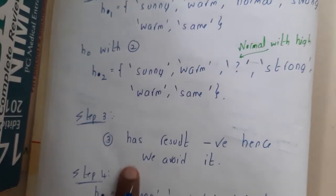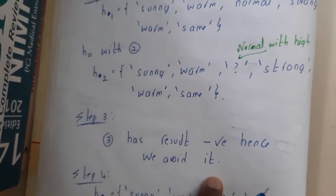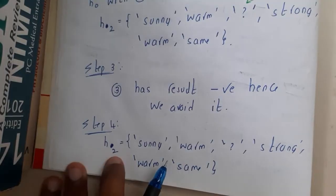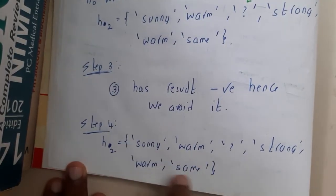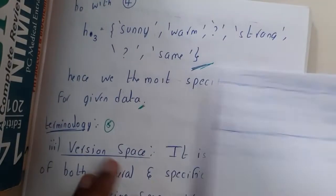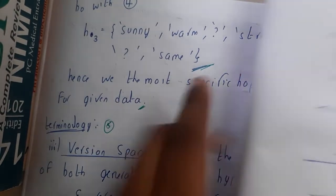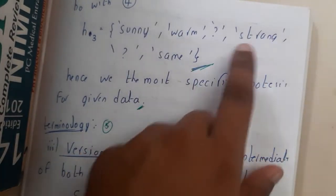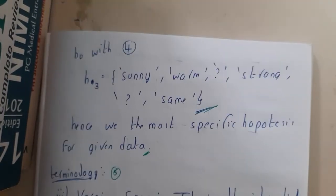With h2 you compare with row 3, but since row 3 is negative you skip it — h3 equals h2: (sunny, warm, ?, strong, warm, same). Then you compare with row 4 and get the final result: (sunny, warm, ?, strong, ?, same). Please write full forms in your examination rather than shortcuts.